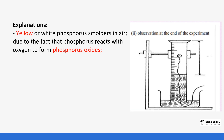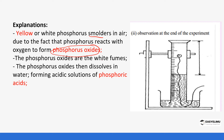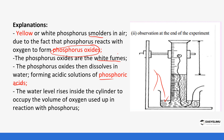The explanation is that yellow or white phosphorus smolders in air because phosphorus is very reactive with air. It reacts with air to form two oxides, both of which appear as white fumes. When these white fumes dissolve in the water in the trough, they form acids — specifically phosphoric acid.